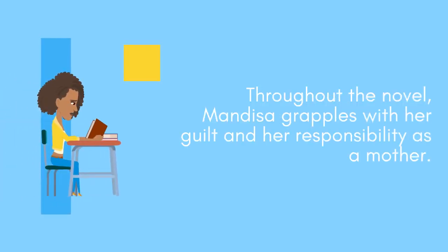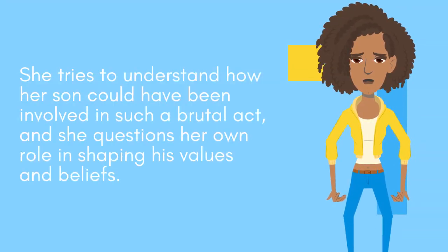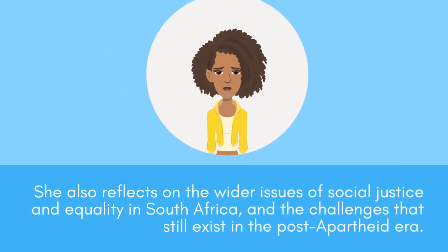Throughout the novel, Mandisa grapples with her guilt and her responsibility as a mother. She tries to understand how her son could have been involved in such a brutal act, and she questions her own role in shaping his values and beliefs. She also reflects on the wider issues of social justice and equality in South Africa, and the challenges that still exist in the post-apartheid era.